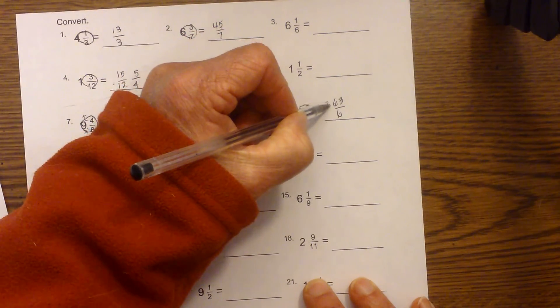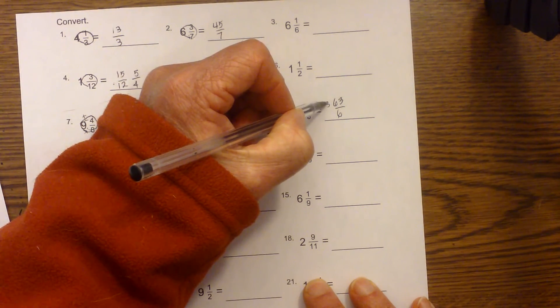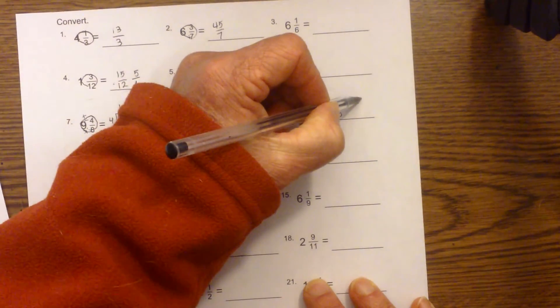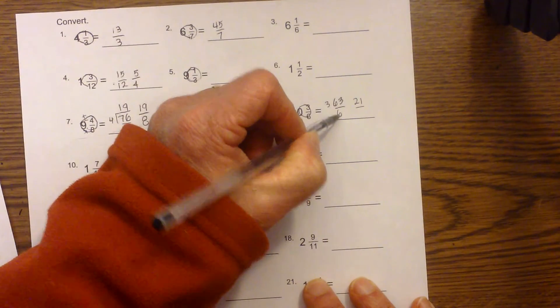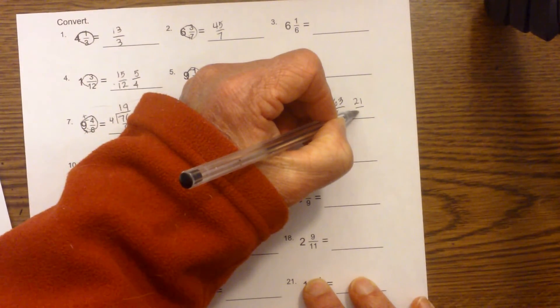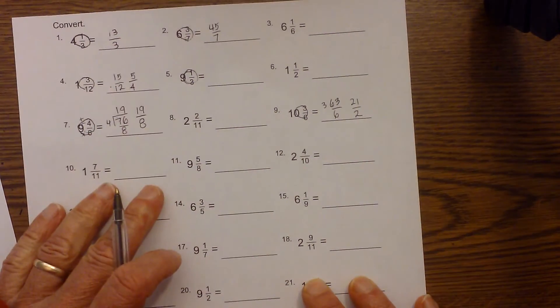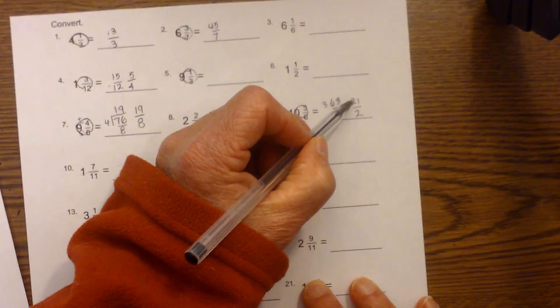So I'm going to divide both of them by 3. So 3 will go into 63, 21 times, and then 3 goes into 6, that is 2 times, and so you would reduce this down to 21 over 2.